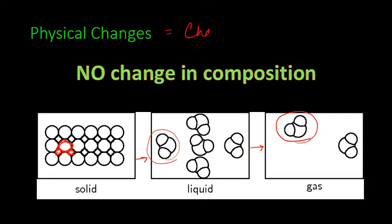So, changes of state are physical changes. See, if you go from Indiana to Michigan, you're still you. You've changed states, but you're still you. There's no change in the composition. So, our states of matter, solid, liquid, and gas, if a substance moves through those, it's a physical change. It might appear different, but it is not different.